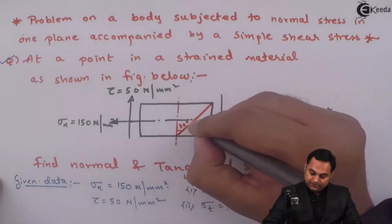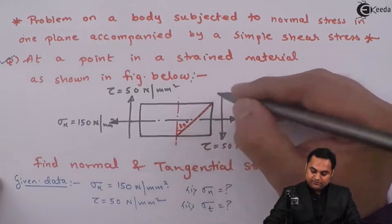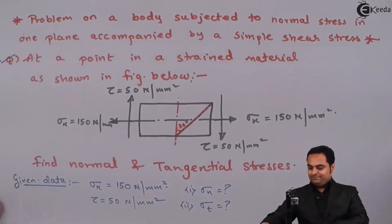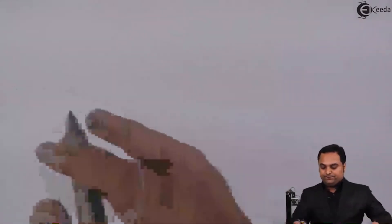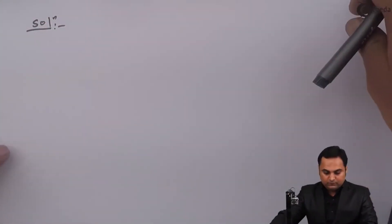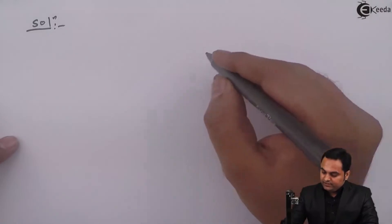On this oblique section, which is the plane here, oblique plane given, on this plane we have to find the stresses. So now once we have the plane, let us see how to get the solution. So here in the solution part, if I can say that...